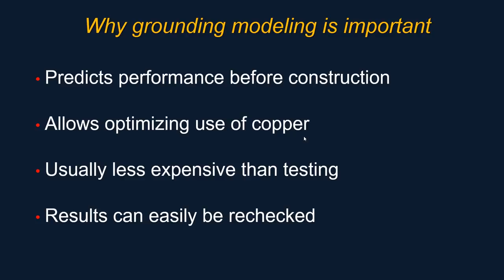Let's talk about why grounding modeling is important. Number one, it predicts performance before construction. The ground grid module that ETAP provides is specifically the modeling tool that allows you to optimize the use of copper so you can be more efficient on the number of rods and conductors. There is a utility within the ground grid systems to provide for optimization of ground rod cost and conductors. Usually it's less expensive than testing. Performing this type of simulation on software like ETAP will be a lot less expensive than performing actual testing. And also, results can easily be rechecked — if something needs to change during design, you can quickly update the numbers and recalculate.